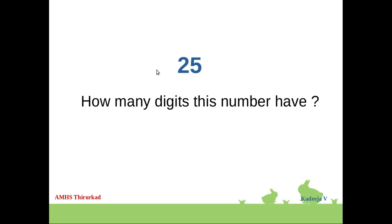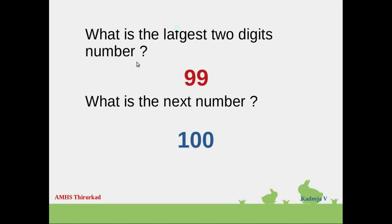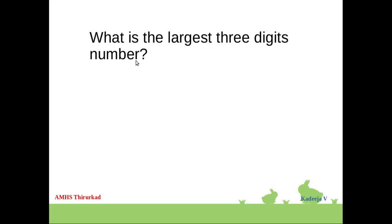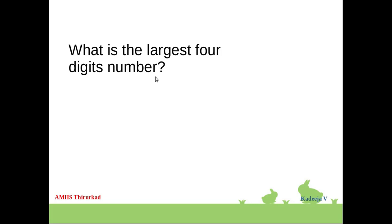Twenty-five. One, two, so twenty-five is a two digits number. What is the largest two-digit number? Ninety-nine. What is the next number? Hundred. What is the largest three digits number? Nine hundred and ninety-nine. What is the next number? Thousand.